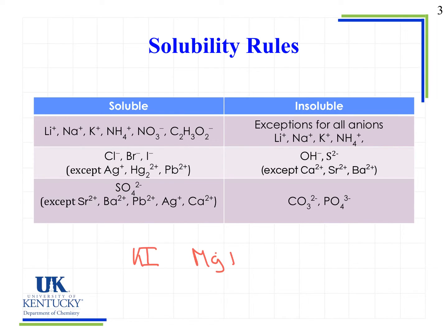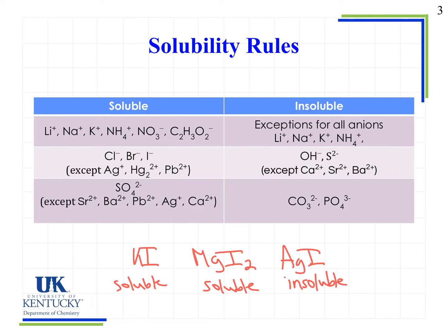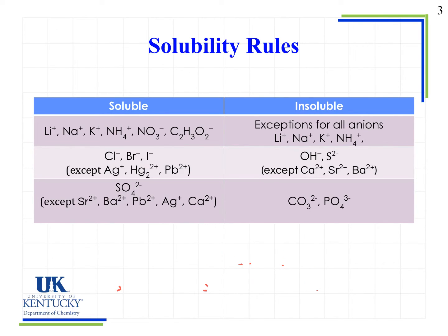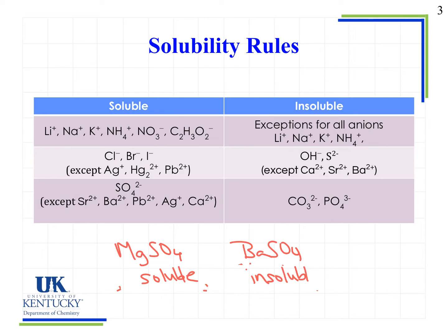Magnesium iodide is generally soluble because it's not listed as an exception, but silver iodide is insoluble because silver is an exception to that rule. When I look at sulfates, those are generally soluble compounds, but there are a few more exceptions: strontium, barium, lead, silver, and calcium. So magnesium sulfate would be soluble, but barium sulfate will not be soluble — it will be insoluble in water.